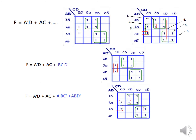First we write the essential ones. These two were the essentials, so we write f = a-dash d + ac. We then need to find additional terms to cover the remaining cells. We keep just the prime essentials and see what is left to cover. The easiest way is to cover the remaining cell from one group, giving a third term: b c-dash d-dash — since b is common and c-dash d-dash comes from the top.